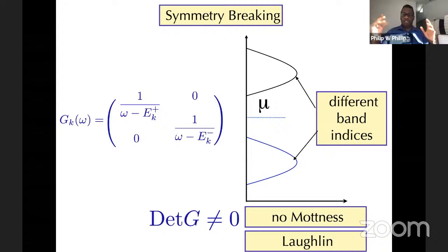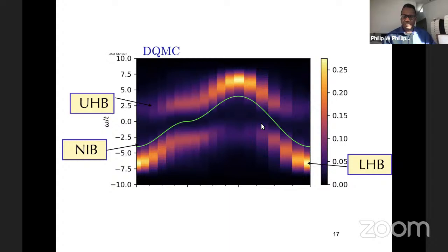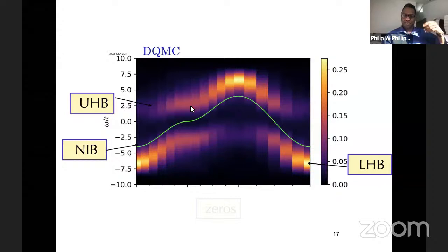One can do determinantal quantum Monte Carlo on the Hubbard model and see very beautifully a two-band structure — the black region indicates a gap between the lower and upper Hubbard bands. The green line is the non-interacting band structure, which has bifurcated: at every momentum there is spectral weight at low and high energies. Because of this, there will be zeros.